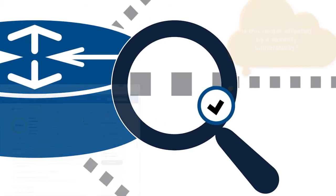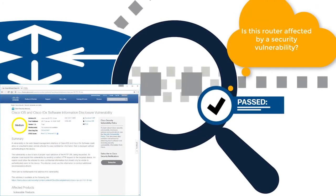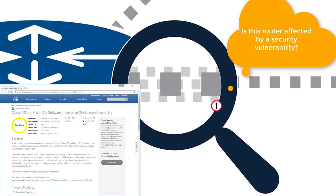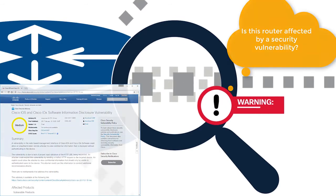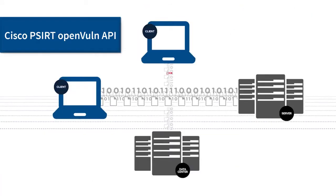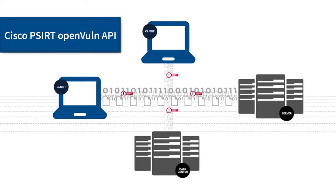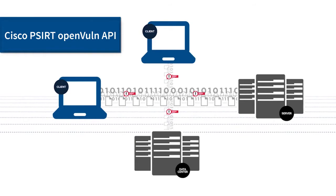This API allows you to programmatically keep up with security vulnerability information. Numerous customers, partners, and Cisco employees have used this API to build tools and assess the impact of security vulnerabilities in their organization.